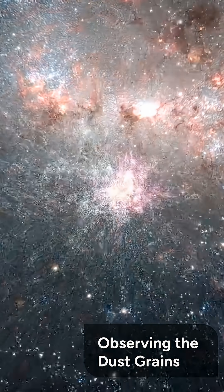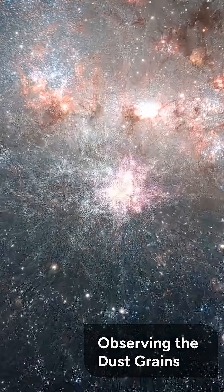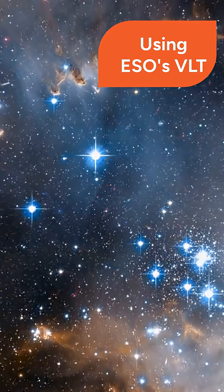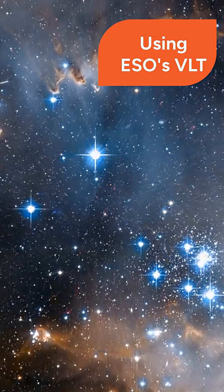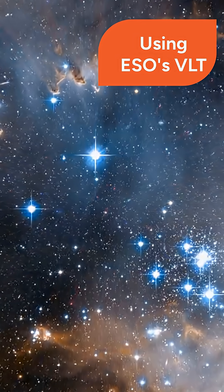To understand the wind mechanism, the team observed the tiny stardust grains surrounding R. Doradus. The team used the SPHERE instrument on ESO's Very Large Telescope to measure light reflected by dust grains, determining their size and composition.